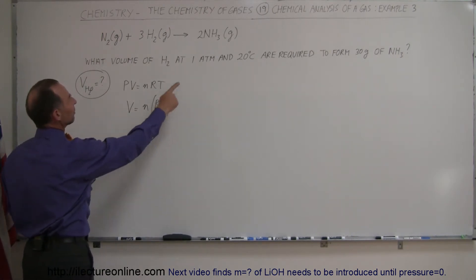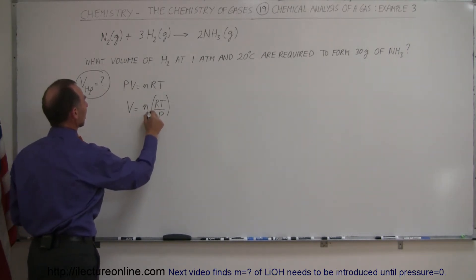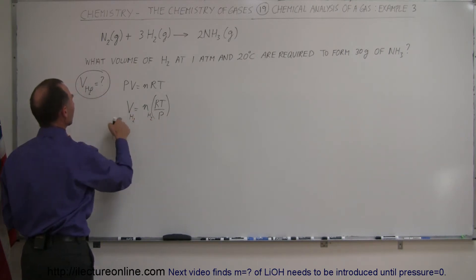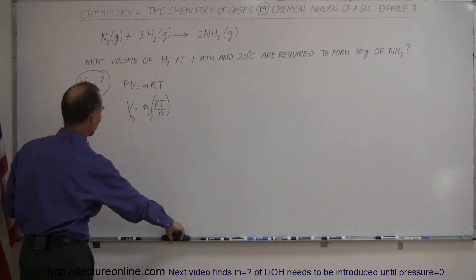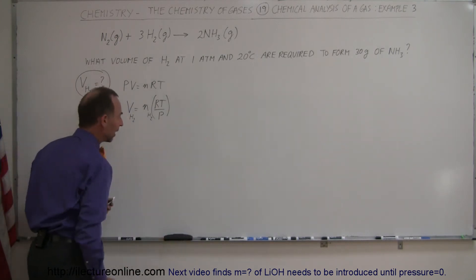We know the temperature, it was given 20 degrees centigrade. We know the pressure, one atmosphere. We know this is a constant, so we need to know the number of moles of hydrogen. So let's put that there, n of H2, and this is the volume of H2. That's what we're looking for, and I said H2O but actually I meant H2, just the hydrogen gas.